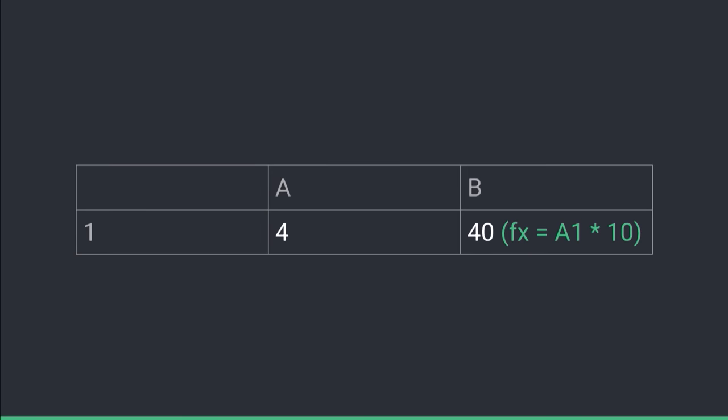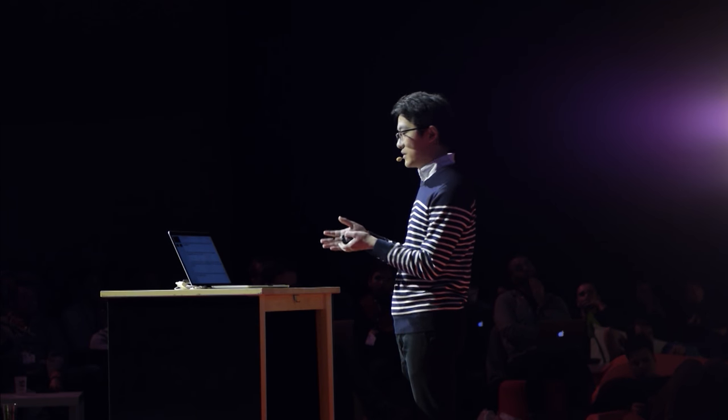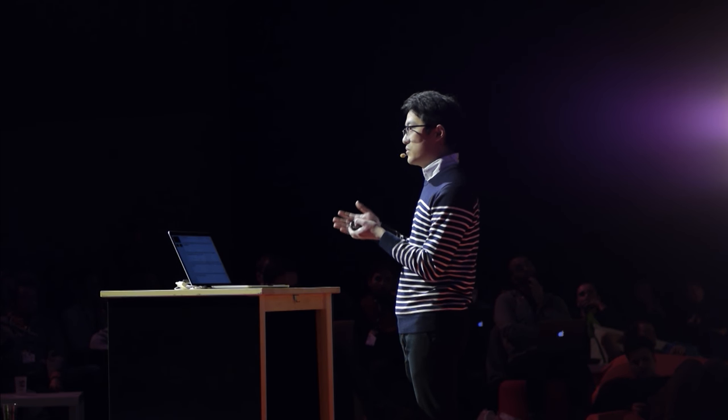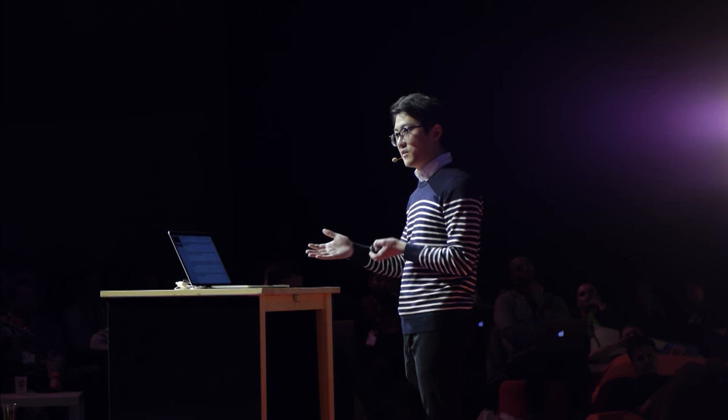After a while, you realize what your boss is really asking you to build is an Excel competitor. Cell B1's value is expressed declaratively as dependent on the value of cell A1 — it's determined by a formula, so it automatically updates when we edit A.